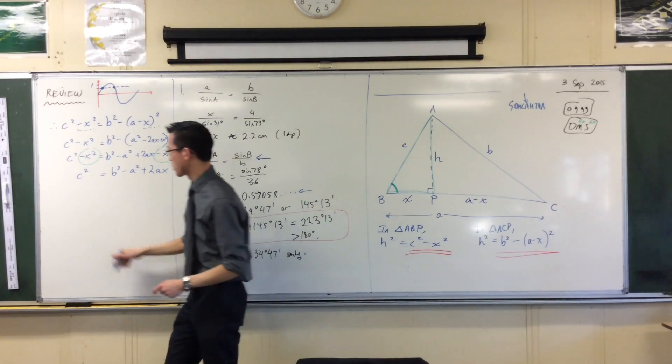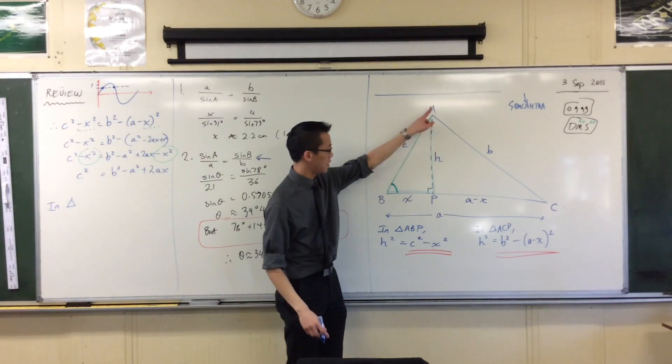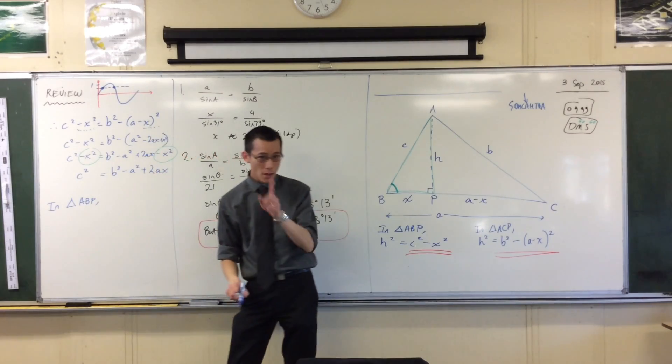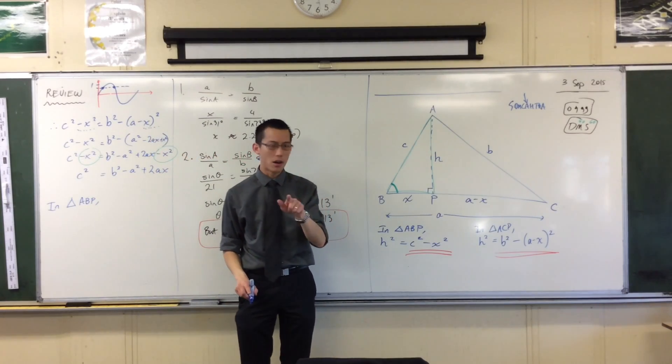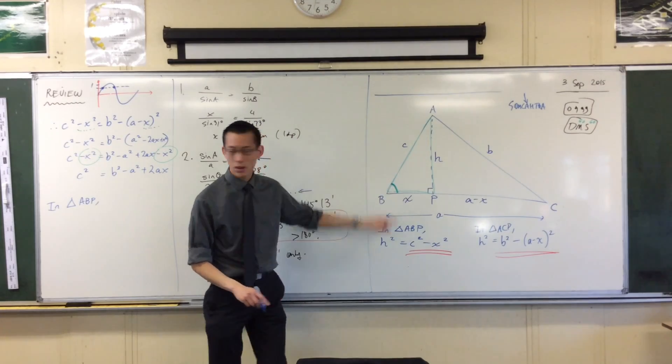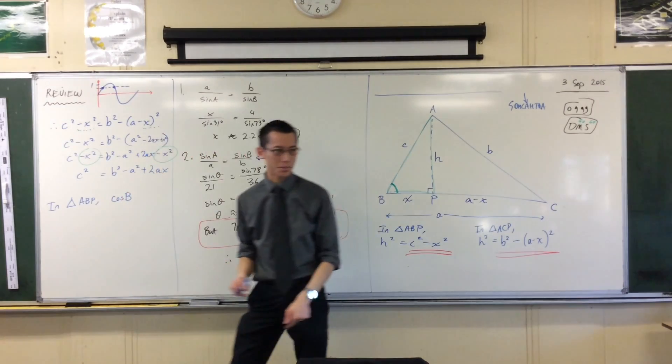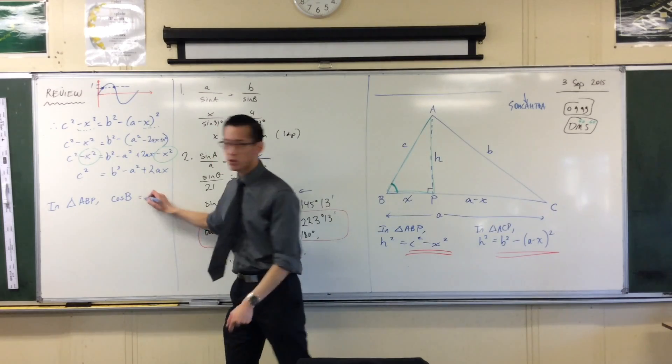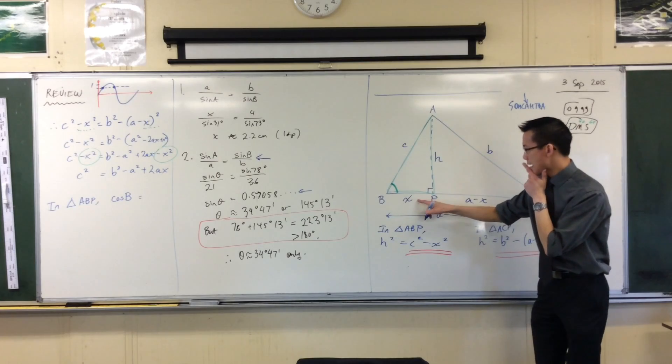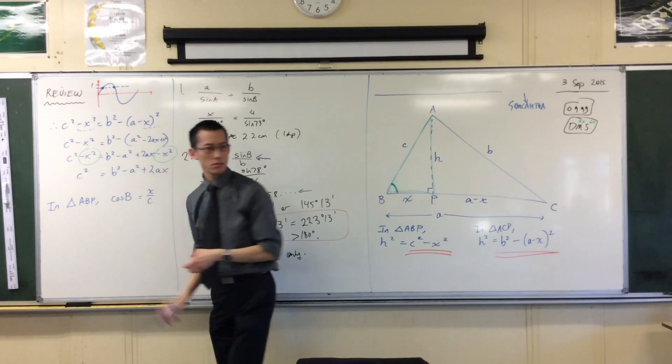So therefore, I'm going to pause this for a second. And I'm going to say, in triangle ABP, I can say, cos, cos of this angle over here, cos of B, is equal to x over c, adjacent on hypotenuse. Are you happy with that?